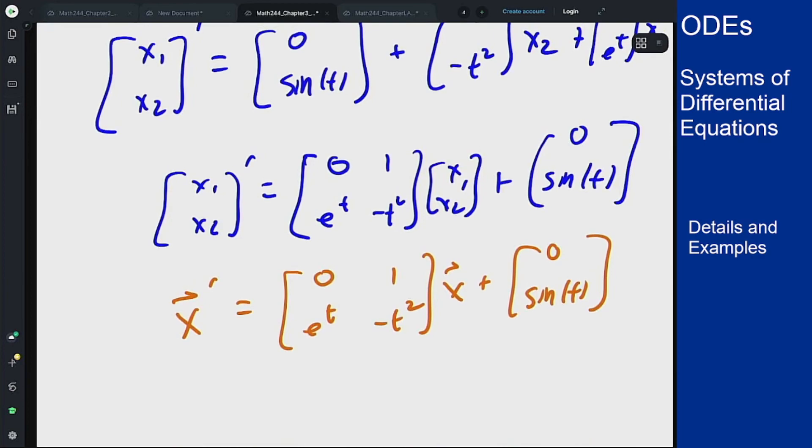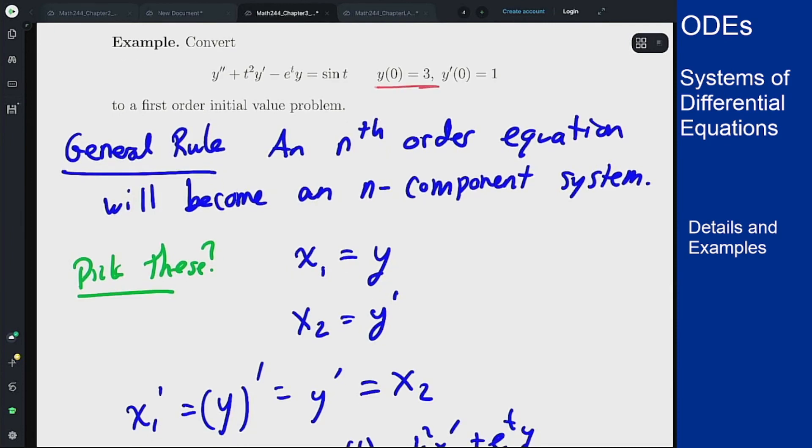The last bit to consider is how does the initial condition factor into this? Our initial condition was that y of 0 is 3, y prime of 0 is 1, but if we look at our definition for x1 and x2, exactly these two functions here. So these conditions here tell me...